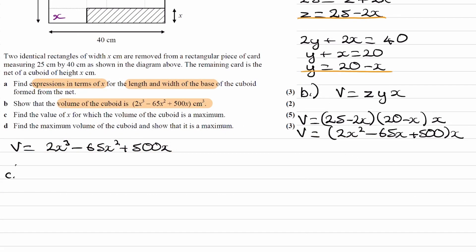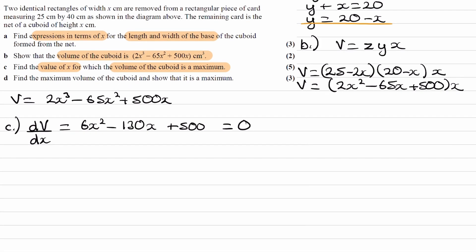For part C, we are trying to find out the value of x for which the volume of the cuboid is a maximum. So to maximize, we have to differentiate. Differentiate the volume with respect to x, and we end up with 6x squared minus 130x plus 500. Set this equal to 0 to find the stationary points, to find the maximum point. And we end up with two solutions for x: x is equal to 50 over 3 and 5.